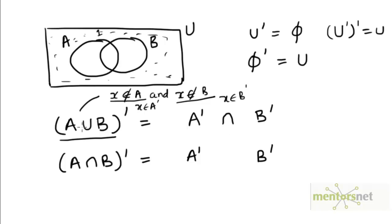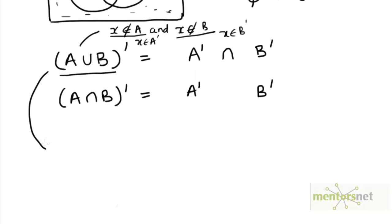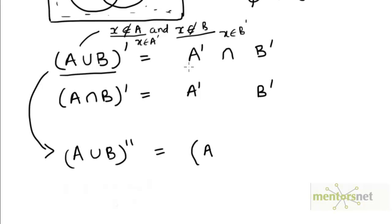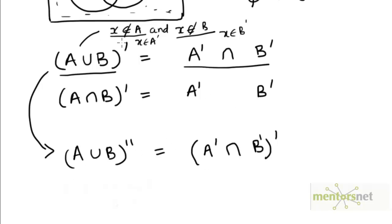So when we push the complement inside and apply it to A and B, we have to invert the union sign — the union becomes intersection. Now we also know that if we take the double complement of A union B, that would be like taking the complement of the right hand side. Since A union B complement is A complement intersection B complement, the complement of the left hand side would be the complement of the right hand side. And the double complement of A union B would just be A union B.